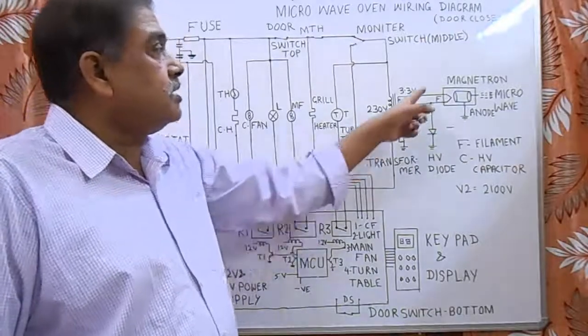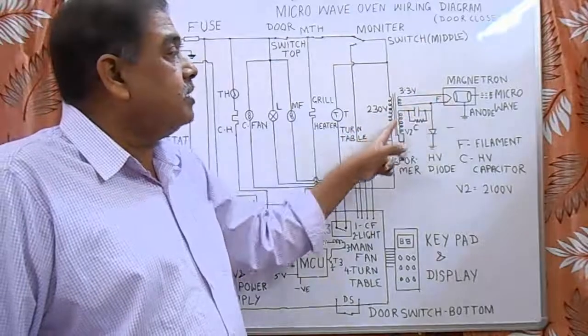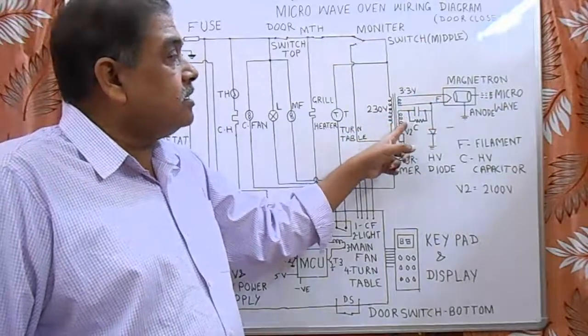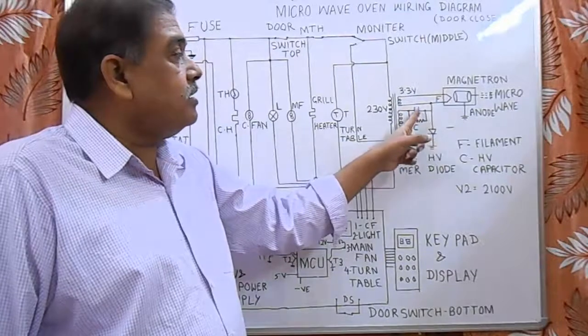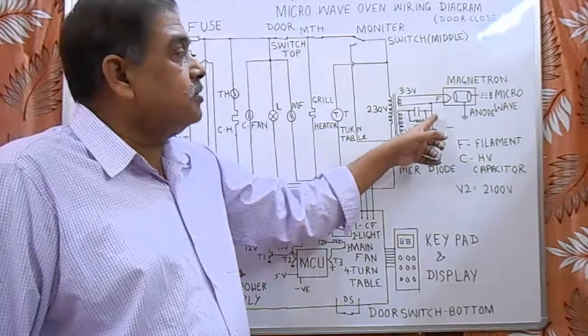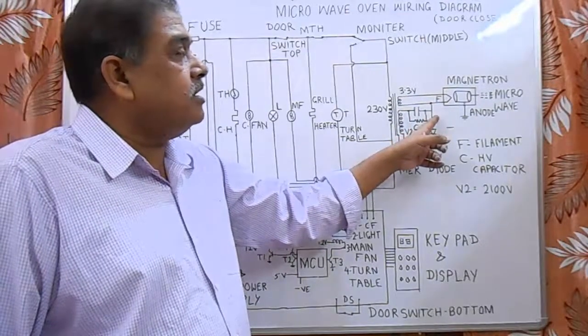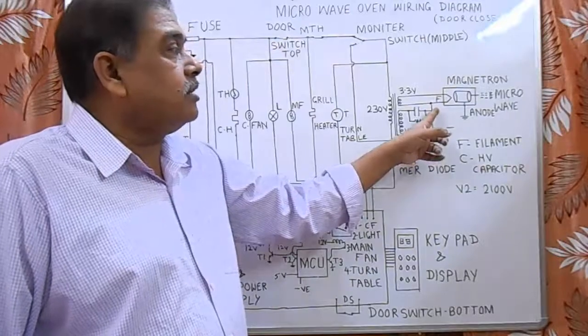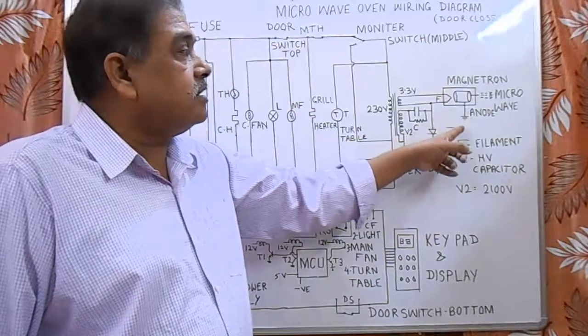This is the main microwave transformer. It produces 3.3 volt supply for the filament and 2100 volt supply for the rectifier and condenser.